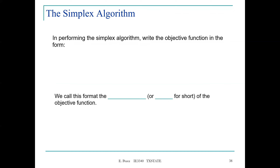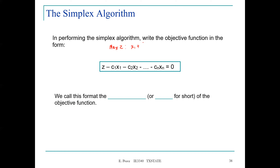When performing the Simplex Algorithm, we write the objective function in the form: z − c₁x₁ − c₂x₂ − ⋯ − cₙxₙ = 0. So for a maximization problem, you move the x terms to the left-hand side and set the equation equal to zero. We call this the row zero version of the objective function, because it will be the first row at the top of the simplex tableau.